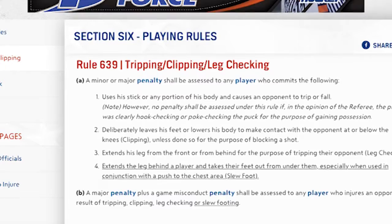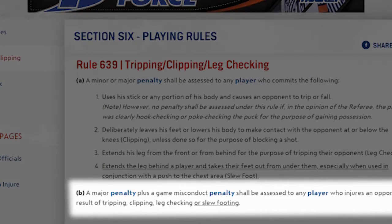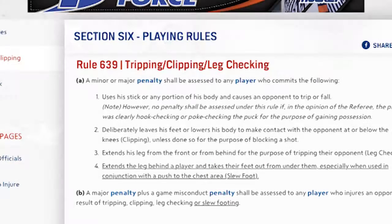Let's not forget about Part B of Rule 639. It reads: a major penalty plus a game misconduct penalty shall be assessed to any player who injures an opponent as a result of tripping, clipping, leg checking, or slew footing. It's important that you're in good position and understand the spirit of Rule 639 when applying.